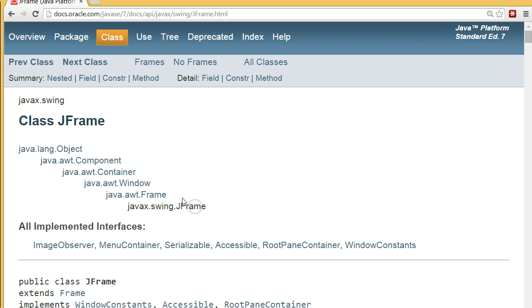A JFrame is a frame. A frame is a window. A window is a container. A container is a component. A component is an object. So JFrame has all the attributes and behaviors of these classes that are higher in the hierarchy. Hierarchy goes from general to specific. JFrame being more specific. Object being more general.